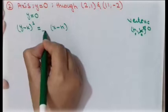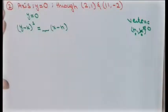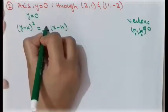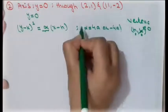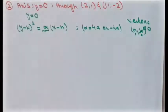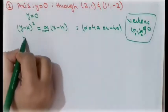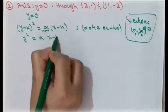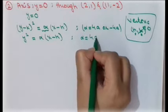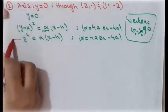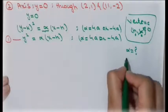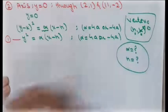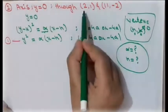We use an unknown term alpha instead of plus or minus 4a, because we cannot determine from the given information whether the parabola opens right or left. The unknowns are alpha and h — this is our first equation. Our aim is to find these unknowns to determine the full equation of the parabola.